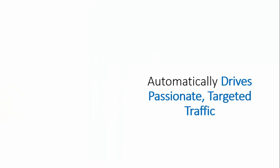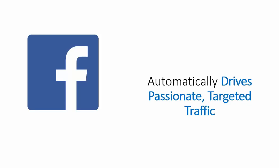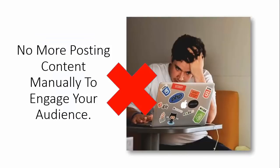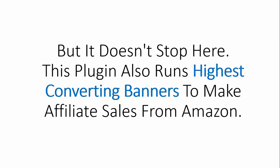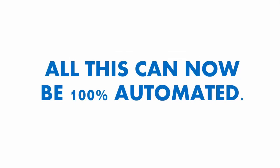This brand new WordPress plugin also automatically drives passionate, targeted traffic from Facebook, Twitter, and Tumblr. No more posting content manually to engage your audience, and no more spending hundreds of dollars running ads or hiring expensive VAs to manage your social shares. This plugin will also run the highest converting banners to make affiliate sales from Amazon. All this can now be 100% automated.